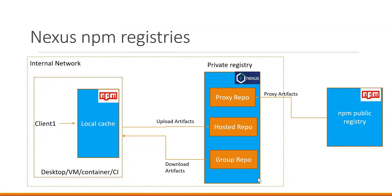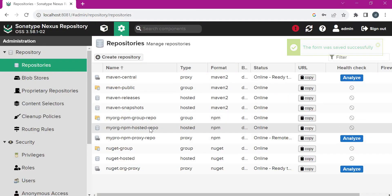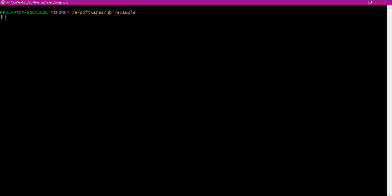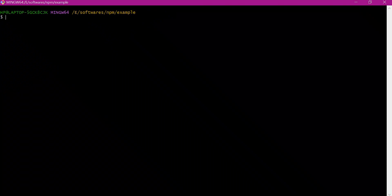Now we have seen how to download packages from the group repository. If we want to upload packages, we have to choose the hosted repository, which is part of the group repository, so that users can also download the uploaded packages from the group repository. Let us try to upload the project package to the hosted repository using the npm publish command. The registry can be mentioned either via the command line or in the package.json file itself — let us try both, starting with the command line.